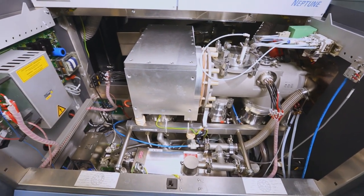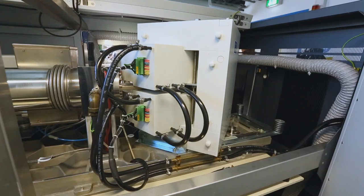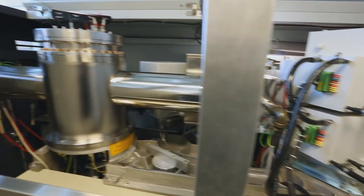The mass spectrometer consists of an ion optic system, an electromagnet and multiple detectors. At the front is a plasma torch that heats the samples to the same temperature as the surface of the sun.